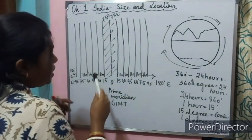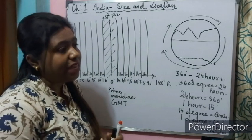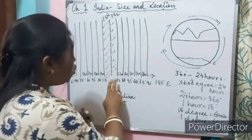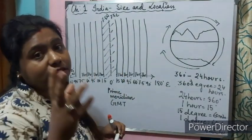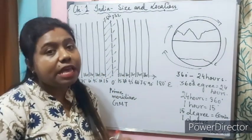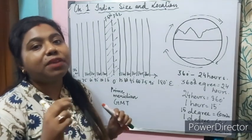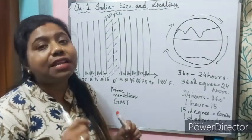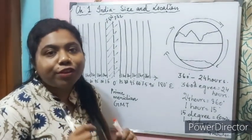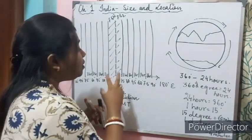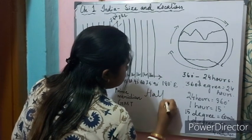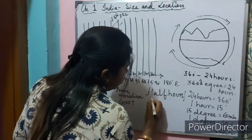Why must it be divisible by 7.5? According to international convention, the longitude between two time meridians should be a multiple of 7.5. This ensures the time difference between adjacent zones will be either a half hour or a full hour.